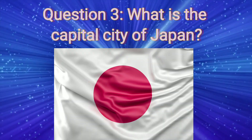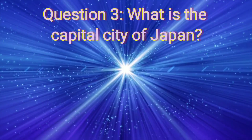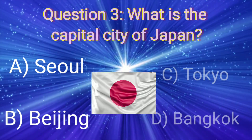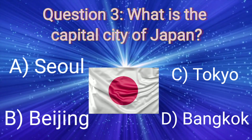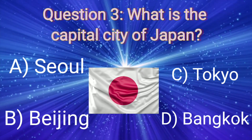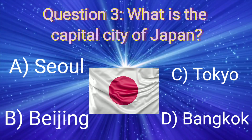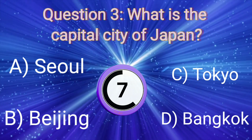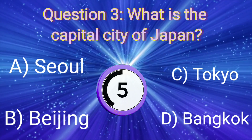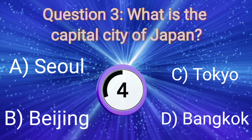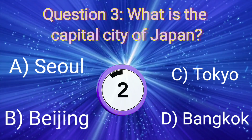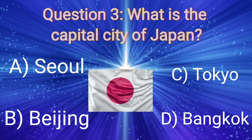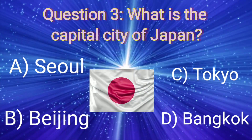Question 3. What is the capital city of Japan? A. Seoul, B. Beijing, C. Tokyo, D. Bangkok. You have only 10 seconds to think. Your time is starting now. Okay, friends, your time is up. The right answer is C. Tokyo.